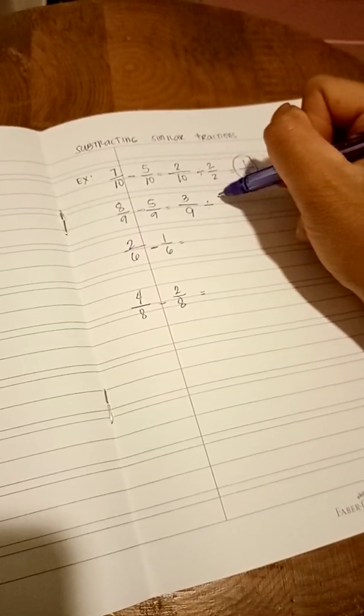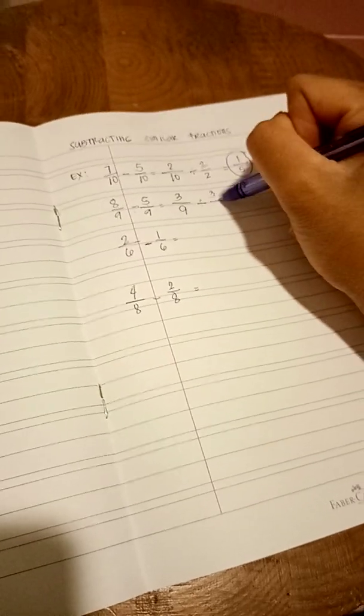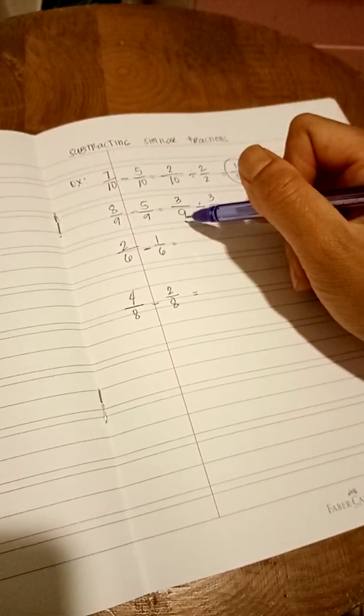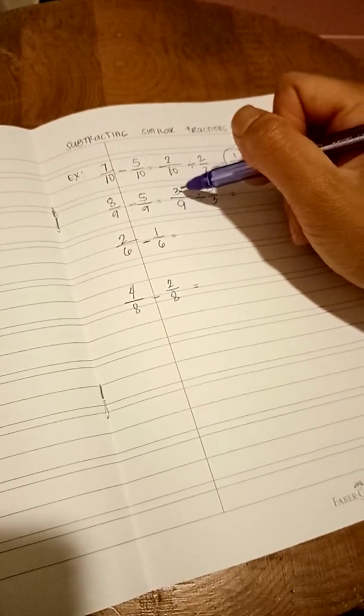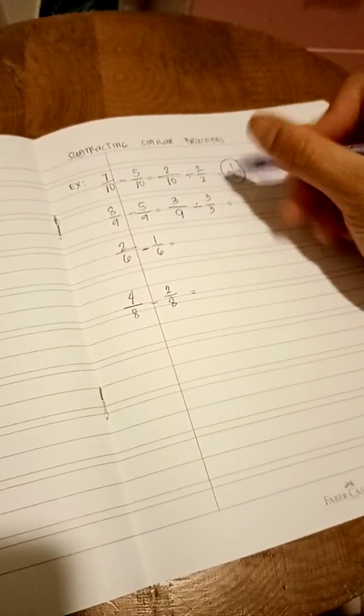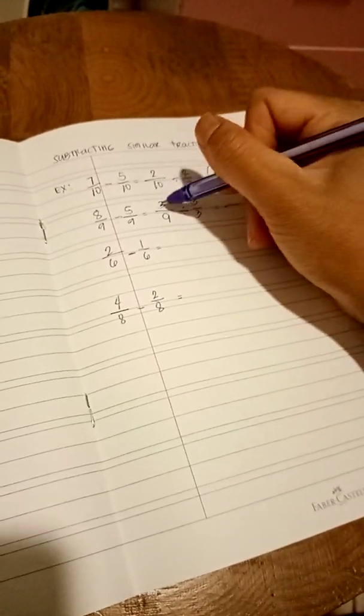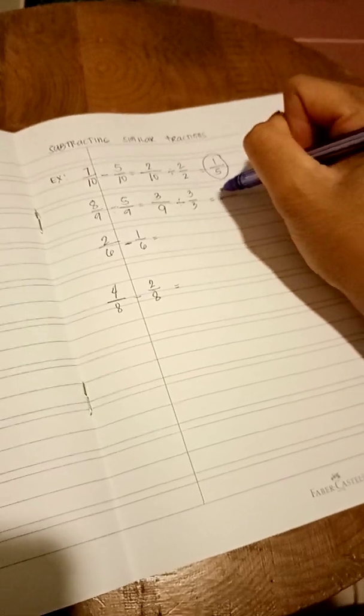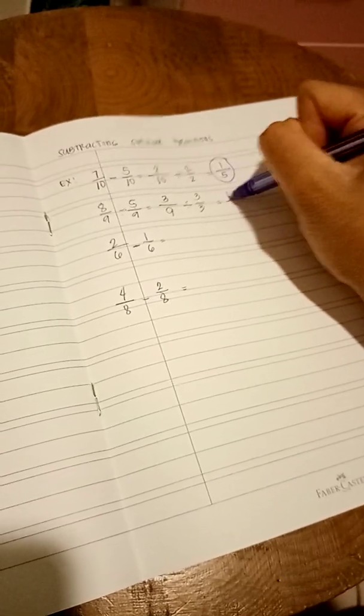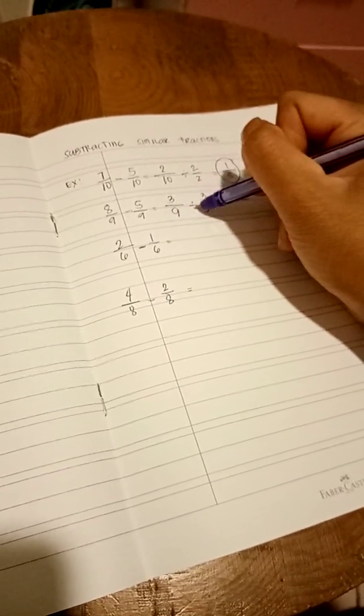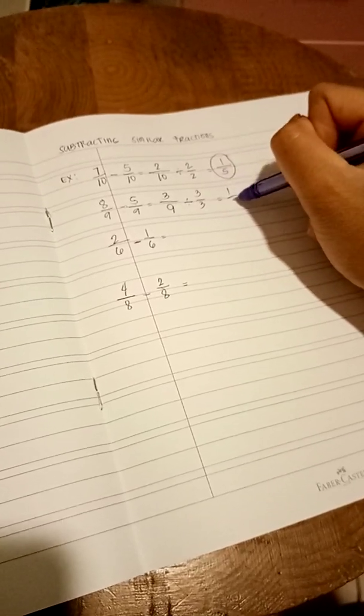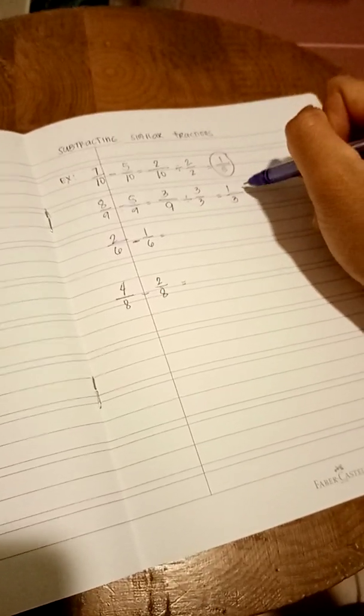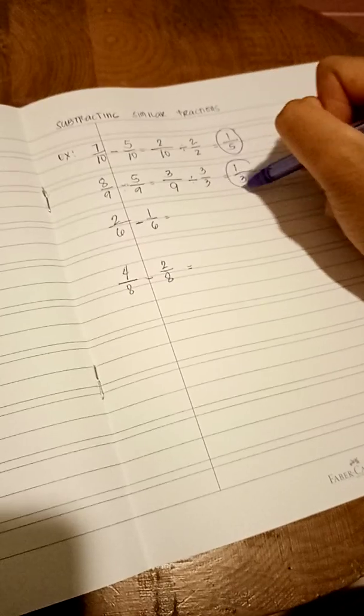We divide 3 over 3 because we can divide the 3 into the 9, and we can divide 3 into the 3. So, 3 divided by 3 equals 1. 9 divided by 3 equals 3. So, this is your final answer.